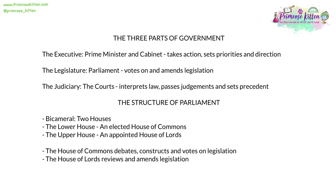There are three parts of government. The executive — the Prime Minister and the Cabinet — which takes action, sets priorities and sets direction. The legislature — which is Parliament — which votes on, amends and scrutinises legislation. And the judiciary — the courts — which interprets law, passes judgments and sets precedent. Parliament is composed of two houses, making it bicameral. The lower house is the elected House of Commons, and the upper house is the appointed House of Lords. The House of Commons debates, constructs, and votes on legislation. The House of Lords reviews and amends this legislation as necessary.